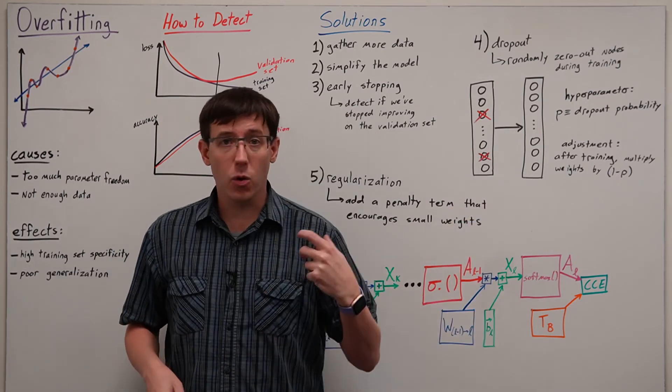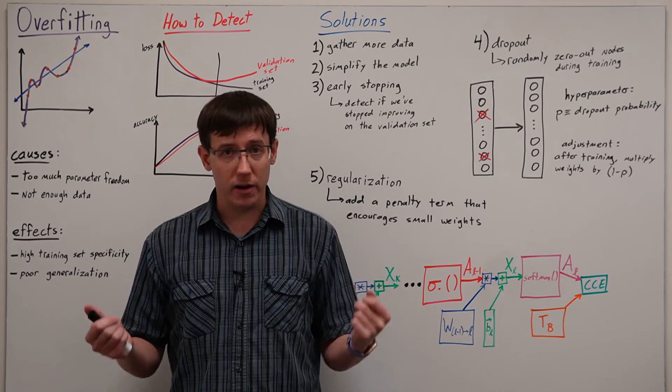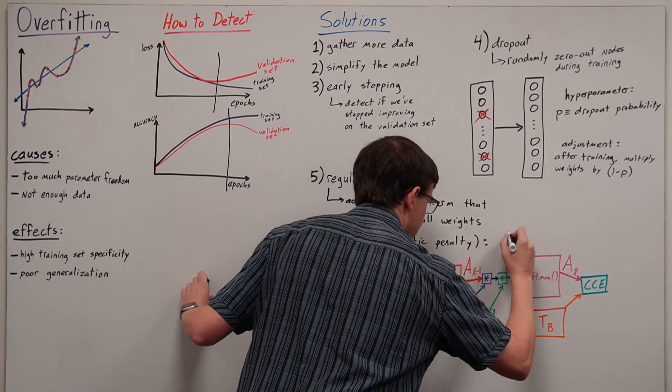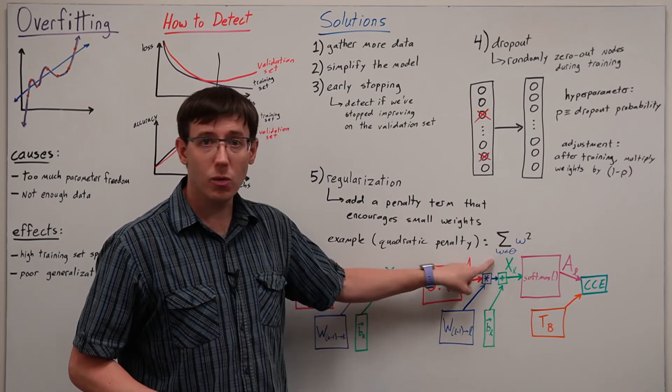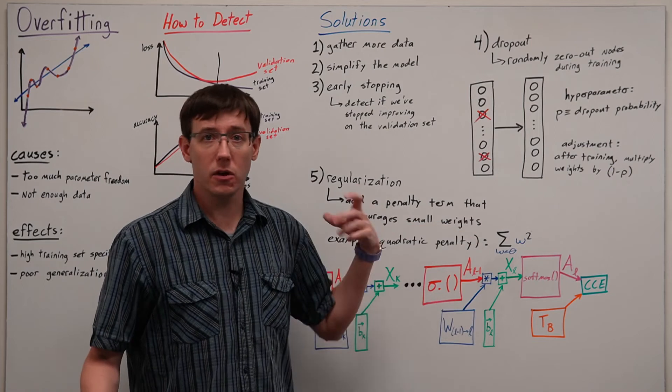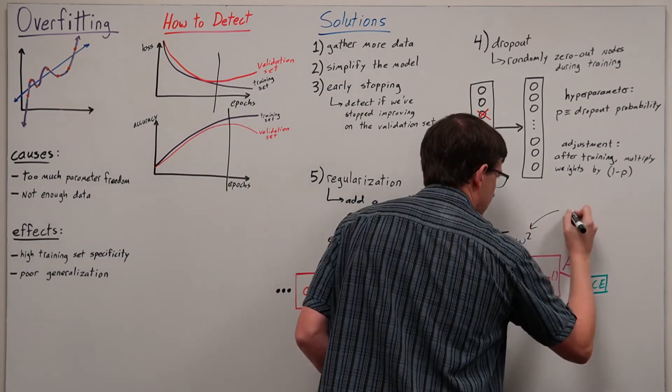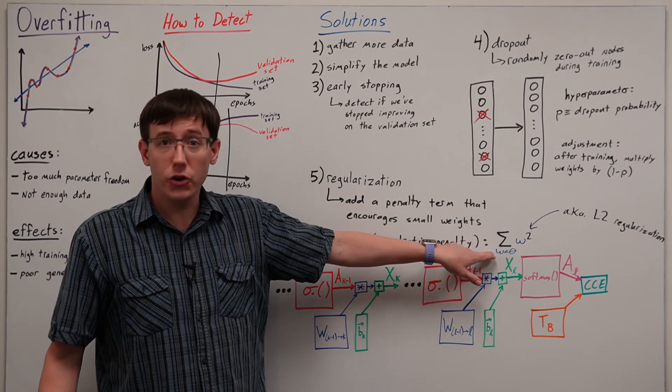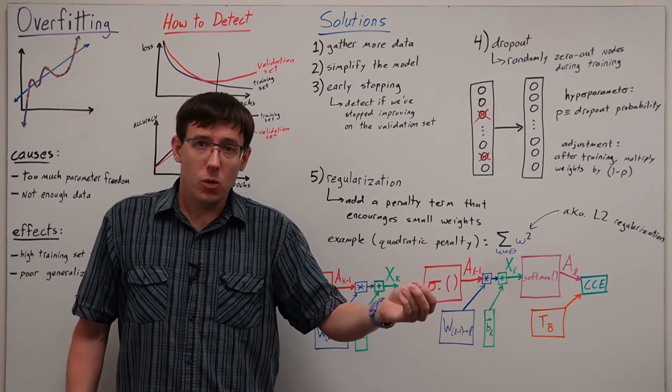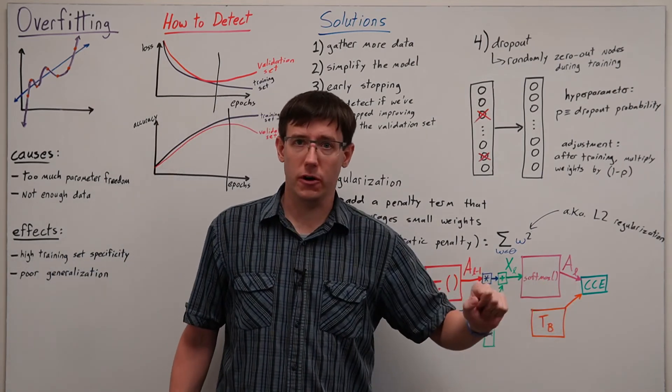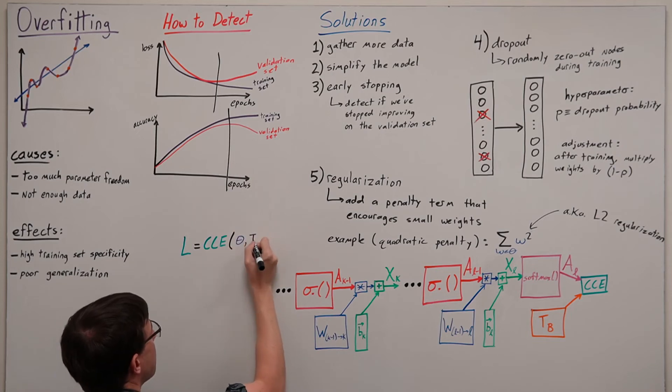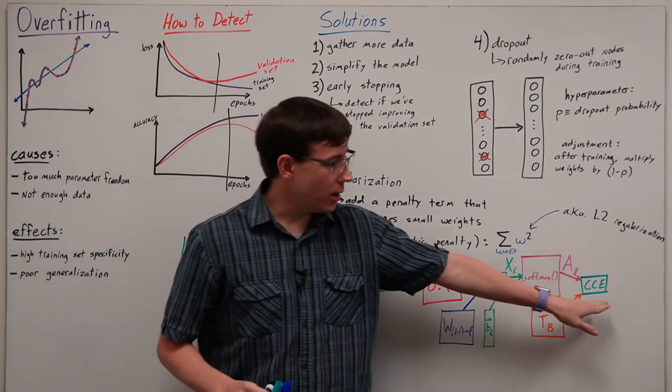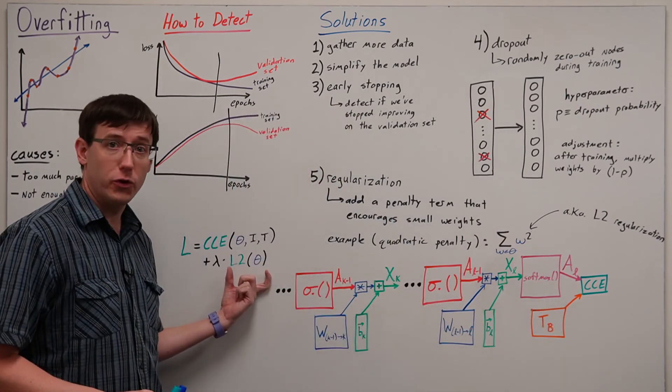One example of this would be a quadratic penalty term, which is the sum of the squares of all of the weights. This quadratic penalty, where we sum up the square of every weight, is also known as L2 regularization. And so, if we want to incorporate L2 regularization into our training, then we need to add it to our existing loss function. And so we get a new loss function that is a weighted sum of our original loss and our L2 regularization. This gives us a hyperparameter lambda, which controls how much emphasis do we put on the regularization portion of the loss versus the cross-entropy or other standard training loss.